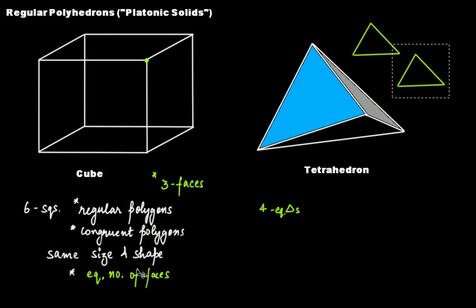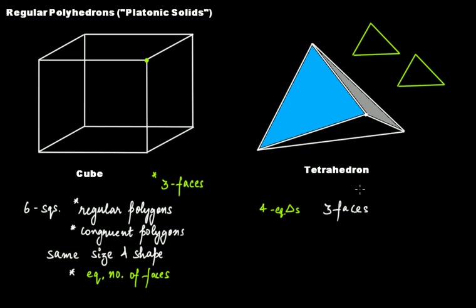The third criterion: at any given vertex, the same number of faces will meet. Let's take this particular vertex — at this vertex you have one face, the gray one is the second face, and the bottom face is the third one. So at any given vertex you'll have three faces meeting. You can try with all four other vertices and find the same. So this is a regular polyhedron.